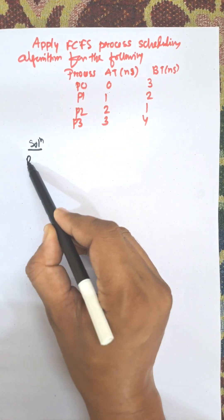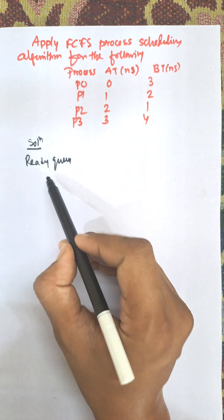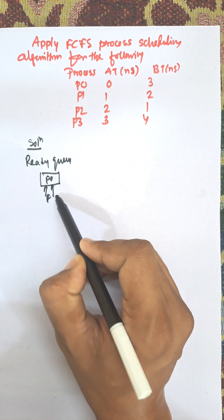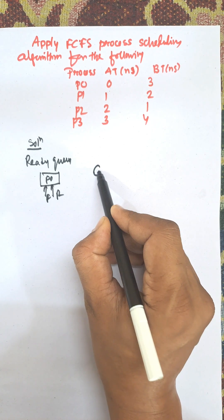First arrival time is there, ready queue is there. Remember the ready queue. P0 is the first process. Now P0 will be selected from the ready queue and this is Gantt chart.